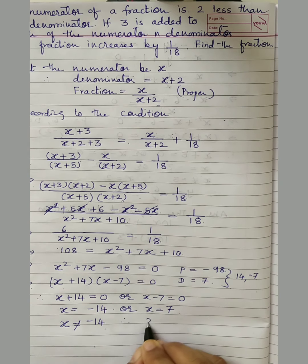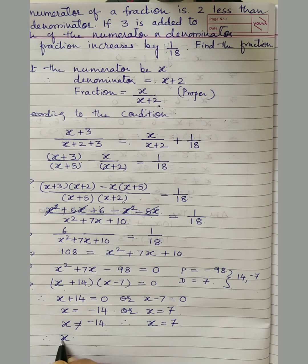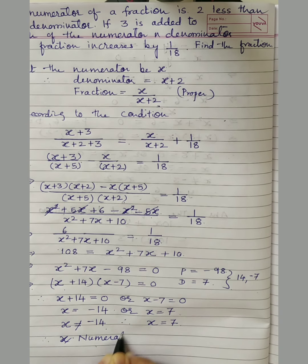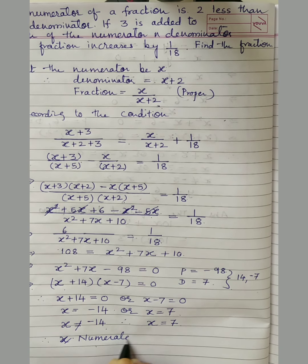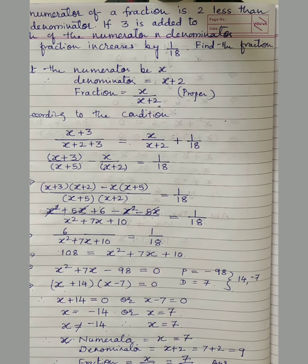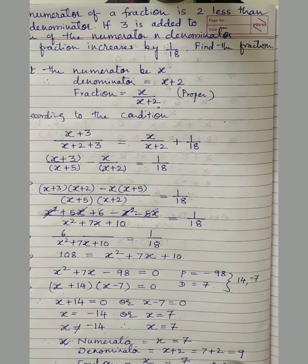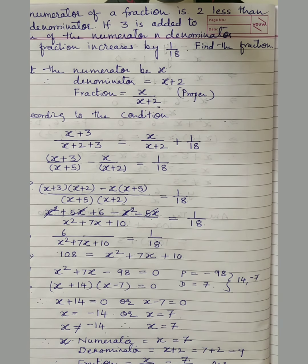So we take x = 7. The numerator is x = 7 and the denominator is x + 2 = 7 + 2 = 9. The question asks us to find the fraction. Therefore the required fraction is x/(x+2) = 7/9. That is our answer.